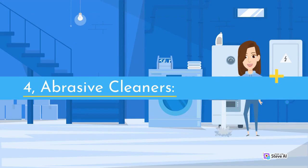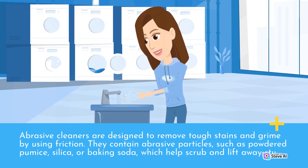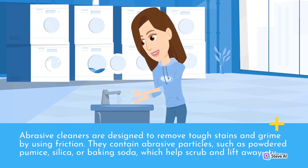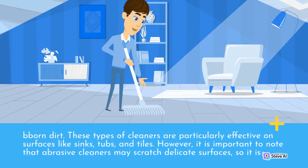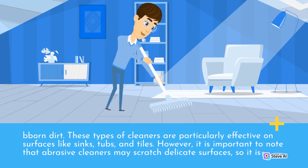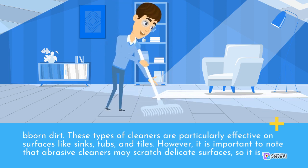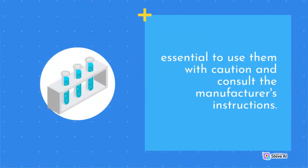4. Abrasive Cleaners. Abrasive cleaners are designed to remove tough stains and grime by using friction. They contain abrasive particles, such as powdered pumice, silica, or baking soda, which help scrub and lift away stubborn dirt. These types of cleaners are particularly effective on surfaces like sinks, tubs, and tiles. However, it is important to note that abrasive cleaners may scratch delicate surfaces, so it is essential to use them with caution and consult the manufacturer's instructions.